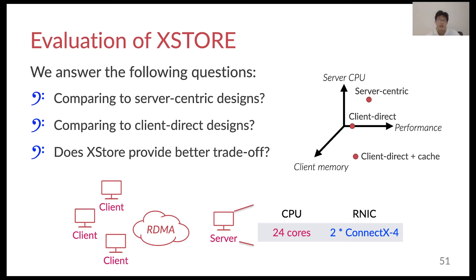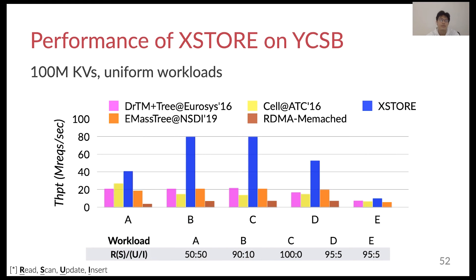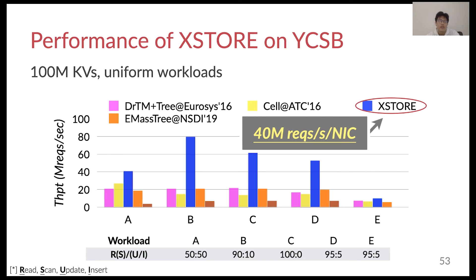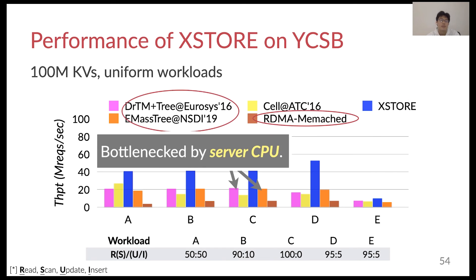Our evaluations are conducted on a local cluster with 16 nodes. Without explicit notation, we dedicate one node as the XDoor server. We present the overall peak throughput of XDoor in the YCSB workload, using one server machine with two connected ConnectX-4 NICs. We compare XDoor with state-of-the-art RDMA-enabled key-value stores, including server-centric and client-direct designs. XDoor achieves relatively high throughput — it can process 40 million requests per second using a single NIC on YCSB's workload. Note that XDoor does not use any of the server CPUs to achieve this high throughput. Server-centric designs achieve poor performance because they are bottlenecked by the server CPU for traversing the tree.